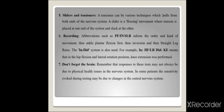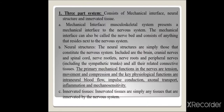Shacklock's concepts begin similarly — the nervous system is a continuum. He described it as a three-part system: mechanical interface, neural structure, and innervated tissue. The mechanical interface is the musculoskeletal system that presents an interface to the nervous system — also called the nerve bed — consisting of anything adjacent to the nervous system such as tendon, muscle, bone, intervertebral disc, ligaments, fascia, and blood vessels.